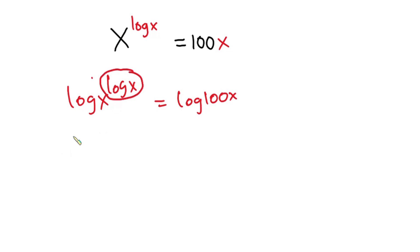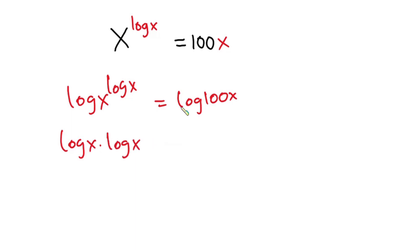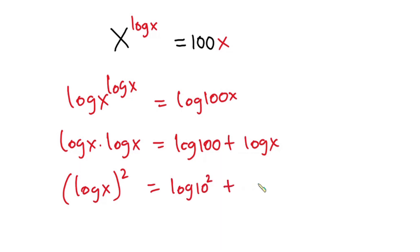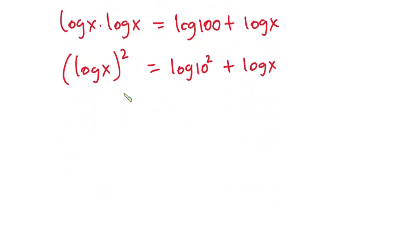I'm going to move this exponent to the front, so we have log x times log x is equal to — and from the properties of log this can be written as log 100 plus log x. Now log 100 is the same as log of 10 squared, plus log x.